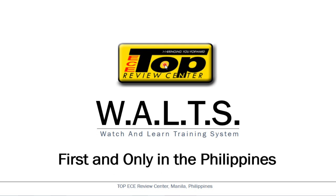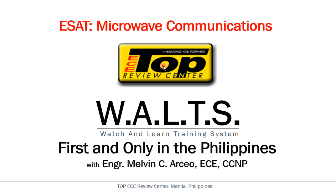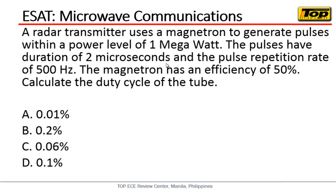Good day to all of you engineers and welcome back to WALTZ, the Watch and Learn Training System. I'm Engineer Melvin Arceo and I'll be talking about microwave communications. A transmitter uses a magnetron to generate pulses with a power level of one megawatt. The pulses have a duration of two microseconds, a pulse repetition rate of 500 hertz, and the magnetron has an efficiency of 50 percent. Calculate the duty cycle of the tube.